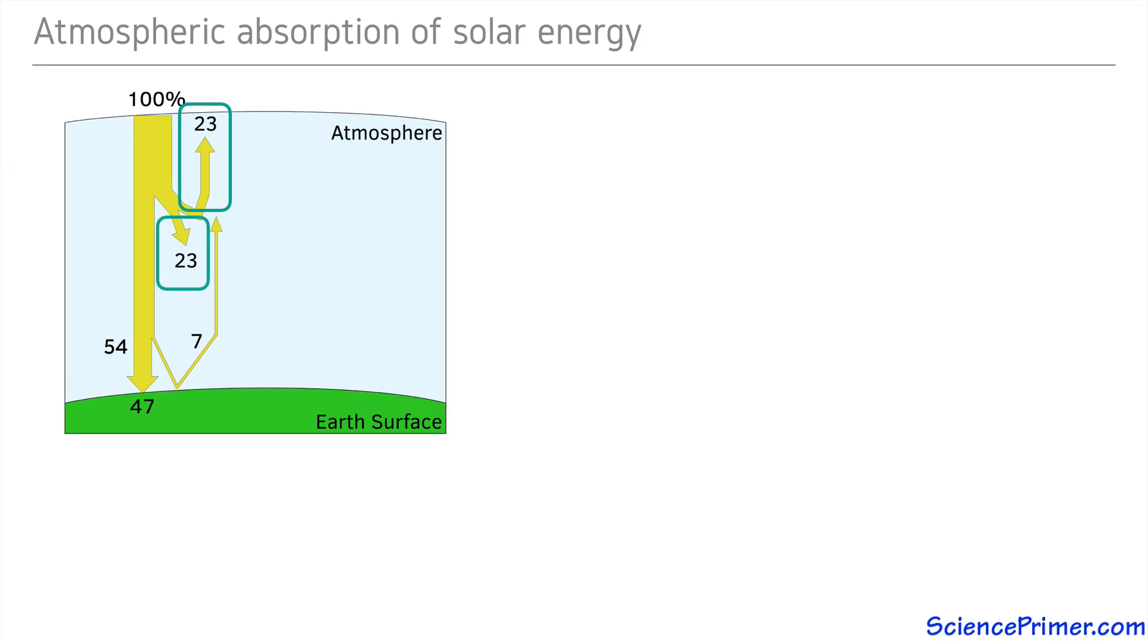The absorption and reflection of energy by the atmosphere not only reduces the total amount of energy reaching the Earth's surface, it also changes the relative amounts of different wavelengths of energy.